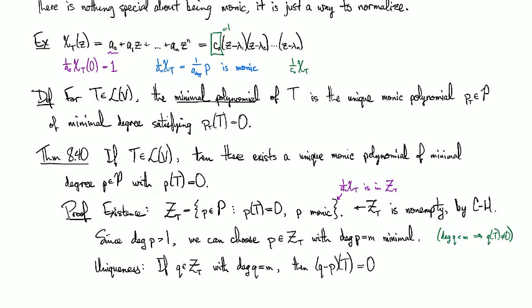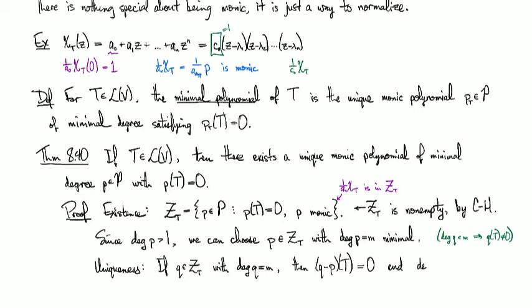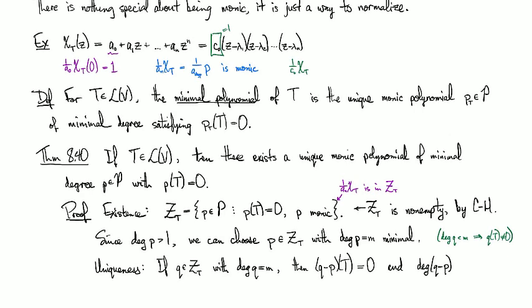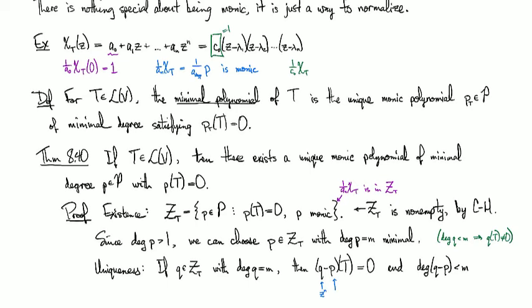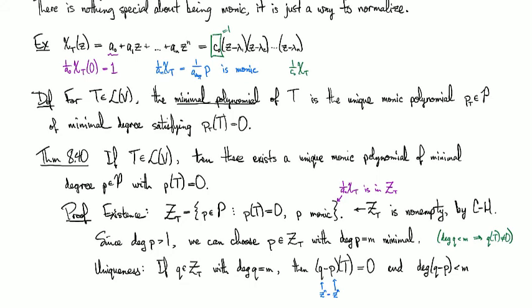And then notice that the degree of Q minus P has to be strictly less than M. And that's because the top term for Q is z^M because it's monic. And the top term for P is z^M because it's monic. So when you look at the top terms and you take the difference, you get zero. And so that implies that the degree of Q minus P is, oh, I guess those were M's.